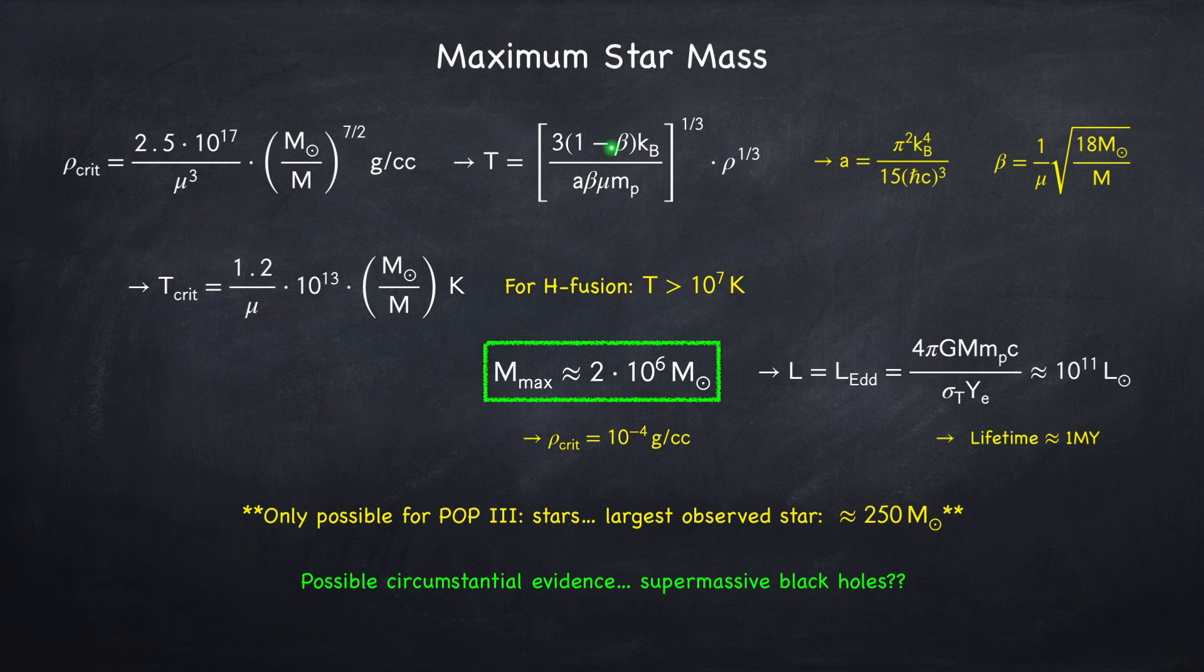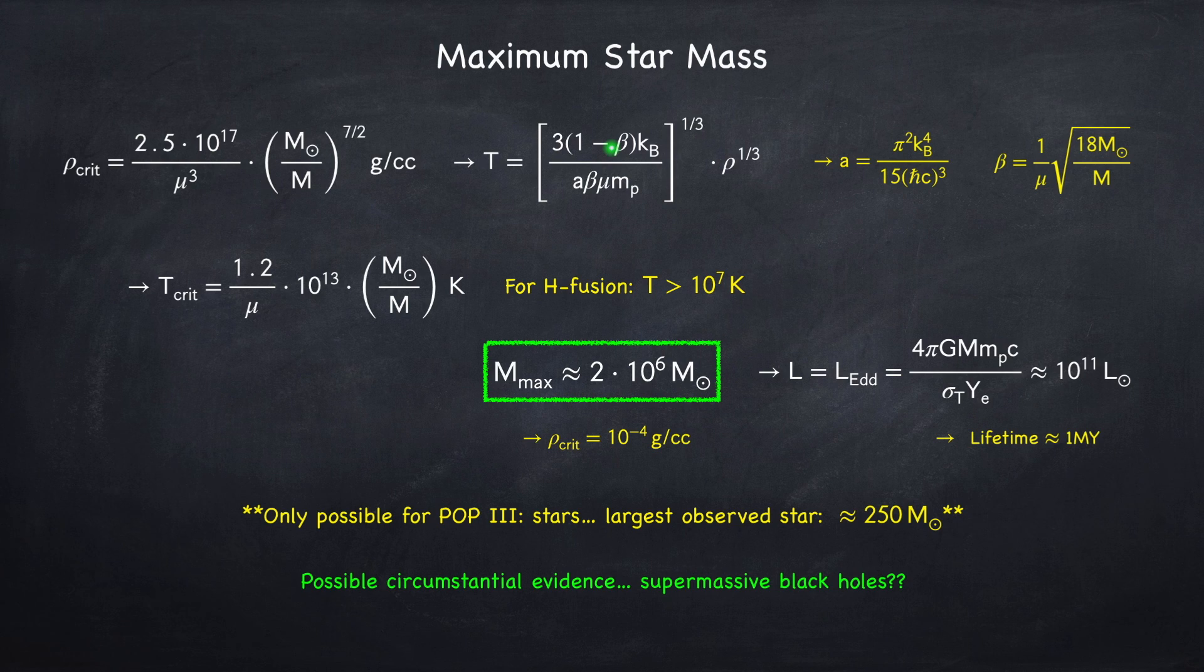Another problem with supermassive stars is how do you make them? It's perfectly reasonable to have a gas cloud of, say, 100,000 or a million solar masses collapse. However, it's rather unlikely that this will collapse into one giant star. It's much more likely that instead of making one giant million solar mass star, it'll instead fragment and make a large cluster of a bunch of smaller stars.